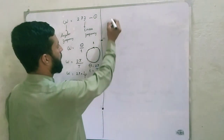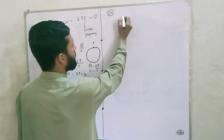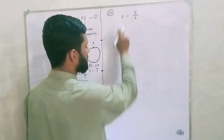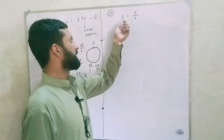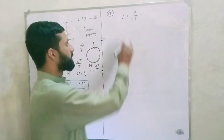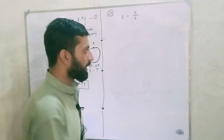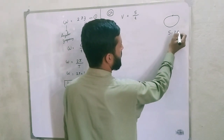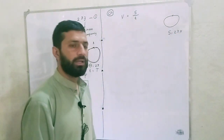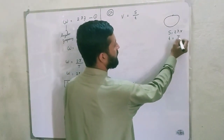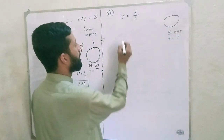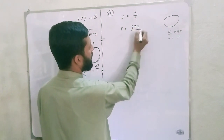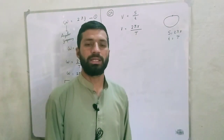Now we take the equation of linear motion. Velocity or speed v is equal to distance divided by time — or displacement divided by time. So v equals s divided by t. If a body completes one vibration, the distance covered is the circumference, equal to 2 pi r, and this is covered in time period capital T.